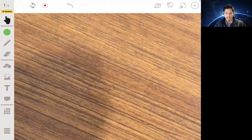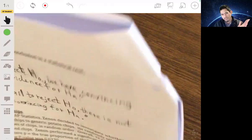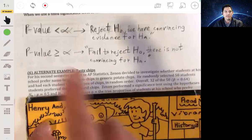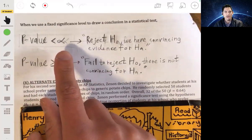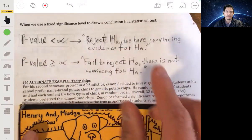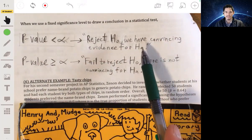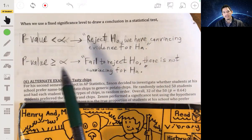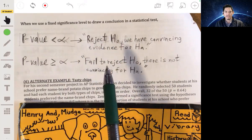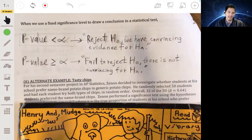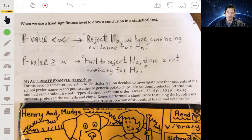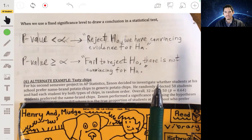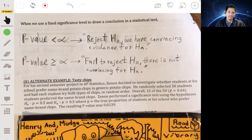Anyways, so that's something else to keep in mind. And so officially, putting it all together, if we have a p-value less than our alpha level, we say we reject H₀ and we have convincing evidence for the alternative hypothesis. If we have a p-value that's more than our alpha, we fail to reject H₀, and we say there's not convincing evidence for Hₐ. So we fail to reject the null hypothesis, there's not convincing evidence for the alternative.